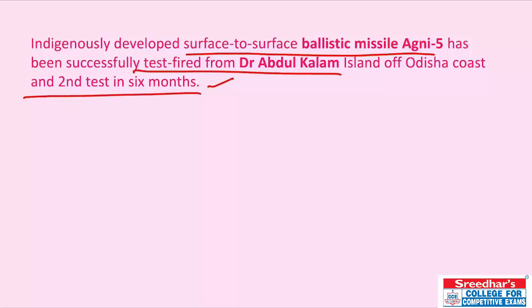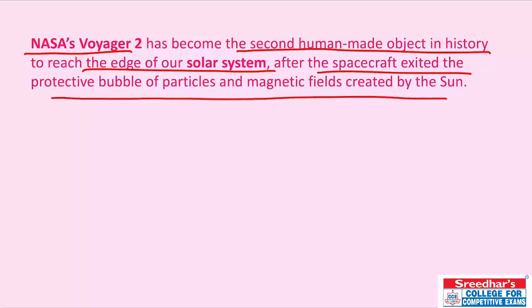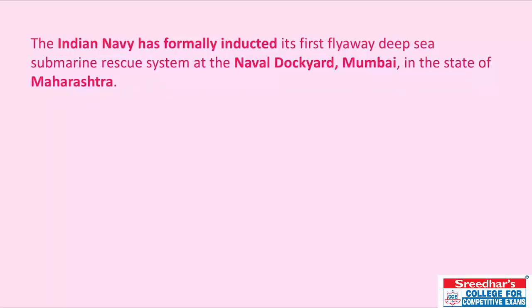NASA's Voyager 2 has become the second human-made object in history to reach the edge of our solar system after exiting the protective bubble of particles and magnetic fields created by the Sun. The Indian Navy has formally inducted its first fly-away deep-sea submarine rescue system at Naval Dockyard Mumbai, Maharashtra.